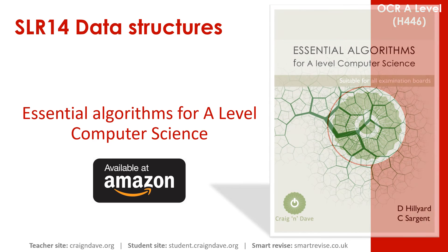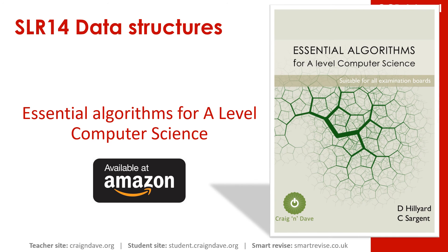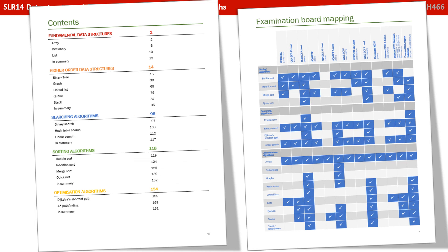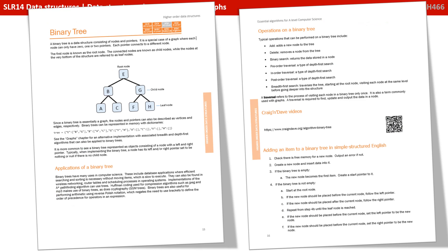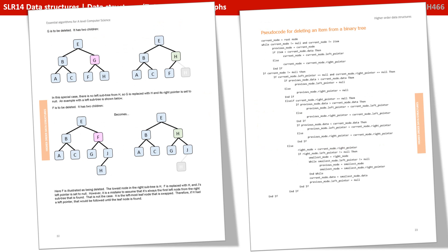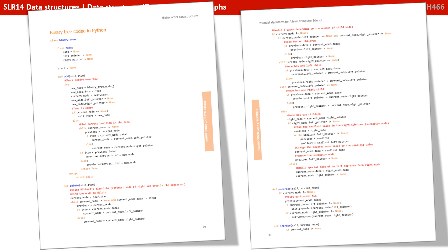We know that getting to grips with data structures and all the algorithms associated with them is a very tricky area of the course, and so we've produced a book called Essential Algorithms for A-Level Computer Science that's available on Amazon. It covers all the data structures you need to know about, along with the algorithms you need to perform on them, and it covers all the exam boards. We overview each data structure, discussing its typical applications and the operations you can perform on it. We provide a QR code linking to additional resources, then present each algorithm in structured English, diagrammatic format, pseudocode, and finally fully coded in both Python and VB.